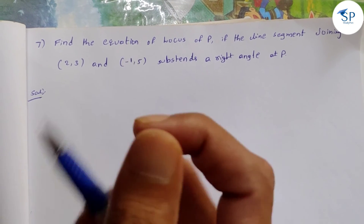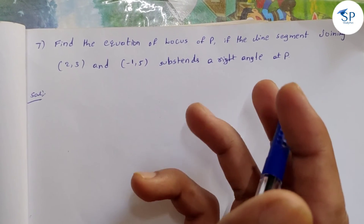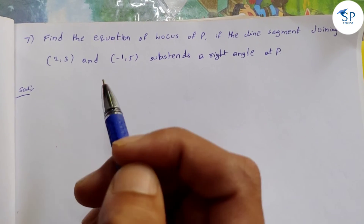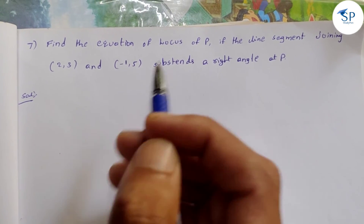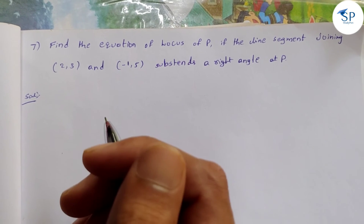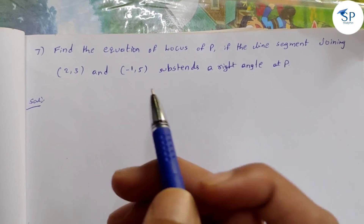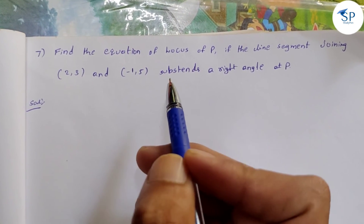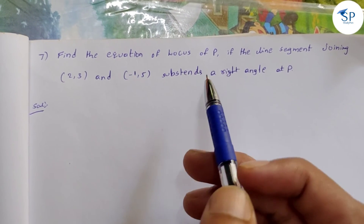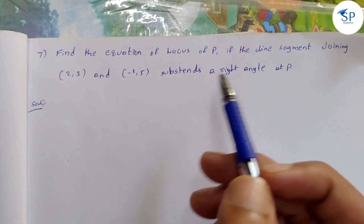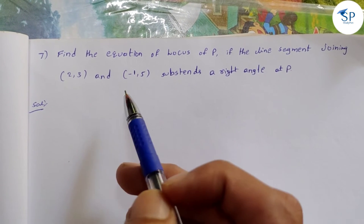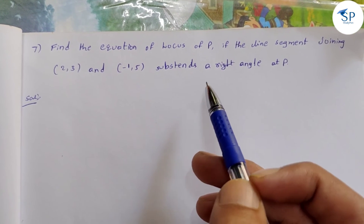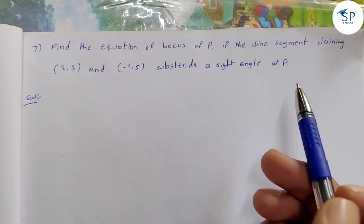Hello everyone. So friends, we have a very important question about locus. Now we have a 7th question, so let's try this question. Find the equation of the locus of P, if the line segment joining (2,3) and (-1,5) subtends a right angle at P.